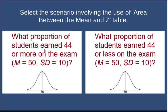What proportion of students earned 44 or more? That's more than half the distribution, so I would use the area between the mean and z.